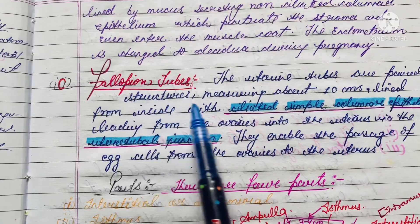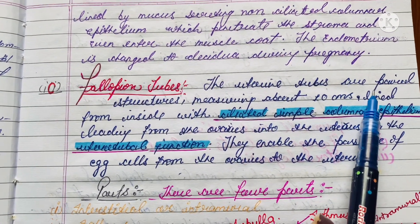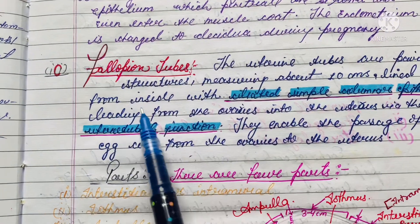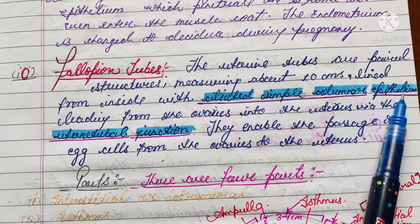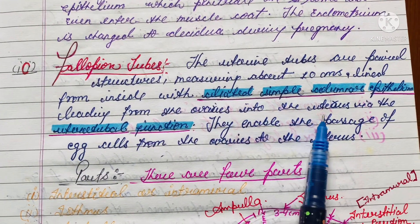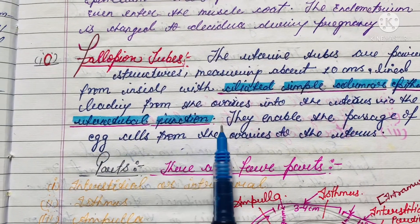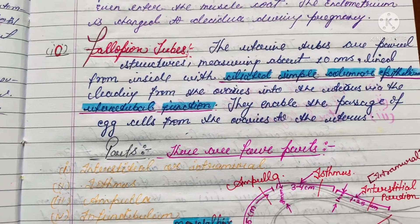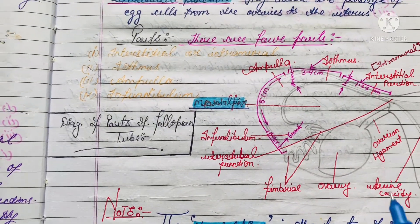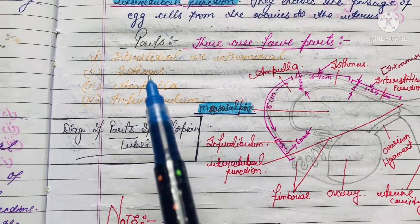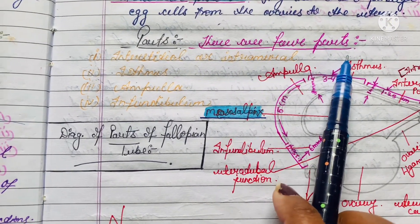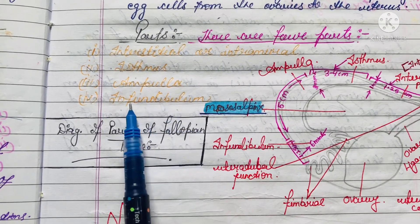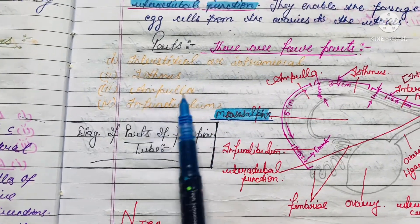Now let's move to the fallopian tubes. The uterine tubes, or fallopian tubes, are paired structures measuring about 10 centimeters, lined from the inside with ciliated simple columnar epithelium. They lead from the ovaries into the uterus via the uterotubal junction, enabling the passage of egg cells from the ovaries to the uterus. There are four parts: interstitial (intramural), isthmus, ampulla, and infundibulum.